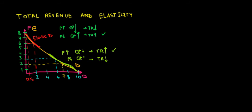Finally, there is a region where we have a proportionate reaction to the price — if the price goes up a bit, quantity demanded goes down a bit, and the relative change is the same between price and quantity demanded. We call this unit elastic demand. In this region our total revenues are maximized, and we're going to prove it on the graph in the next video.